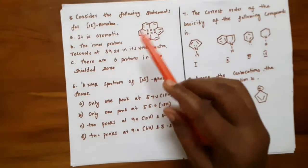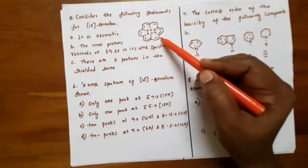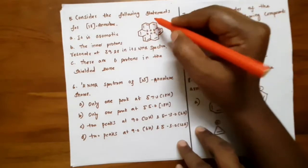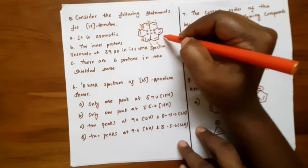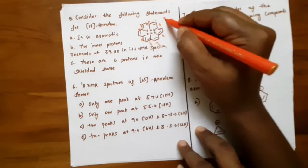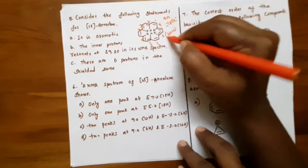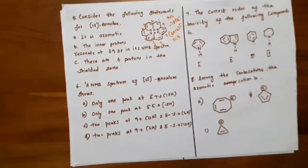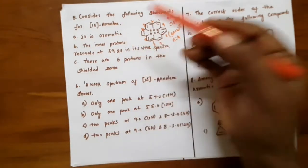The fifth question considers statements for 18-annulene. If you count the pi bonds: there are 9 pi bonds, so 9×2 = 18 pi electrons. It obeys 4n+2 pi rule (with n=4), hence this compound is aromatic. The first statement says it is aromatic — that is correct.